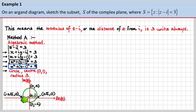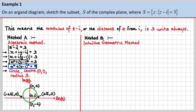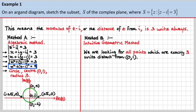There it is sketched on the Argand diagram. You can see the center here, going up 3 and down 3, and of course it does the same laterally. I've shown the axis intercepts in terms of x. Now let's do Method B, the intuitive geometric method. We're looking for all points which are exactly 3 units distant from (0, 1).